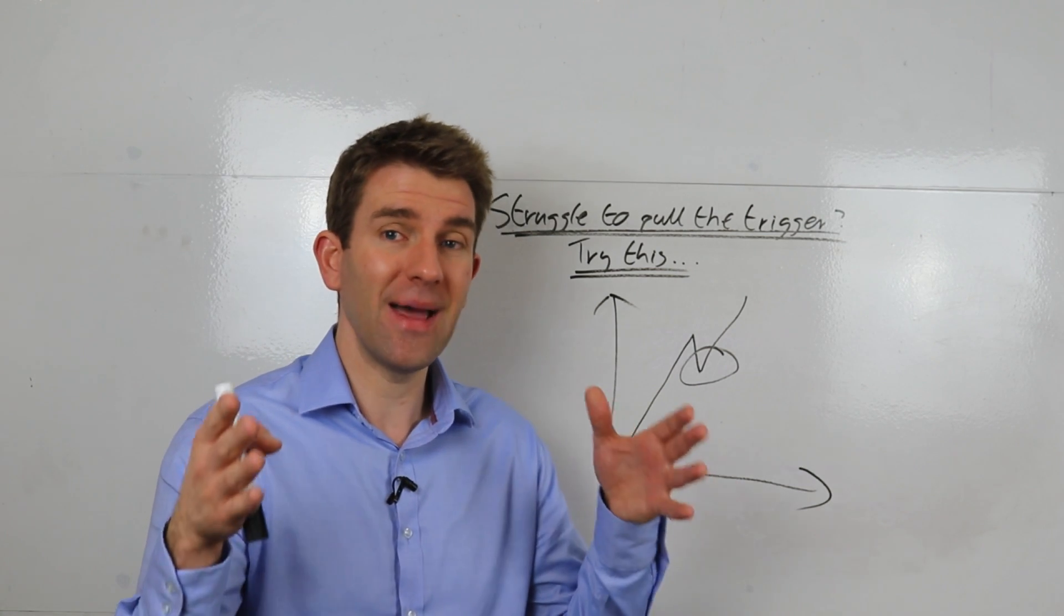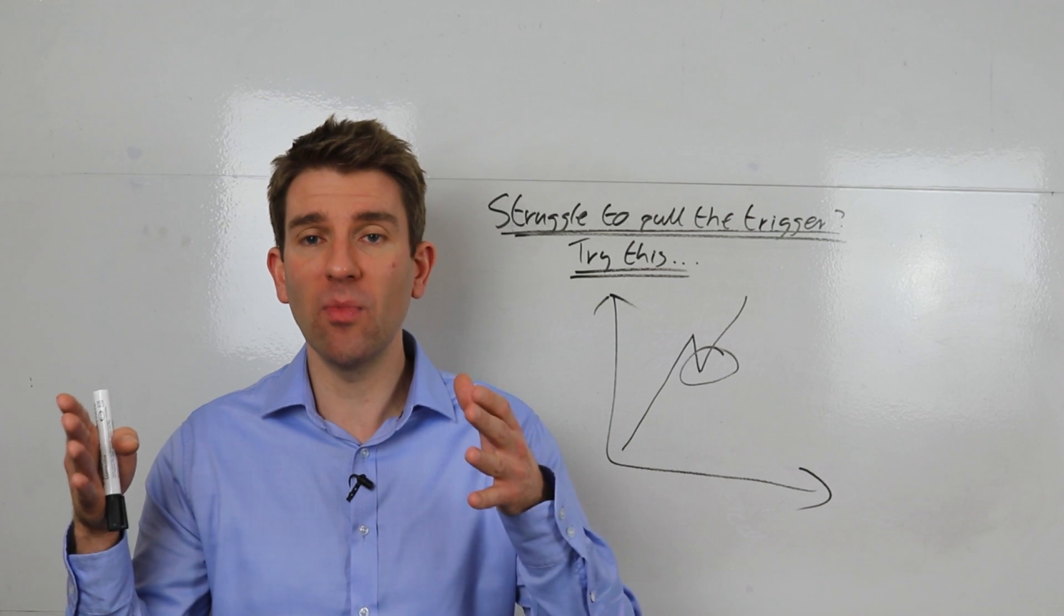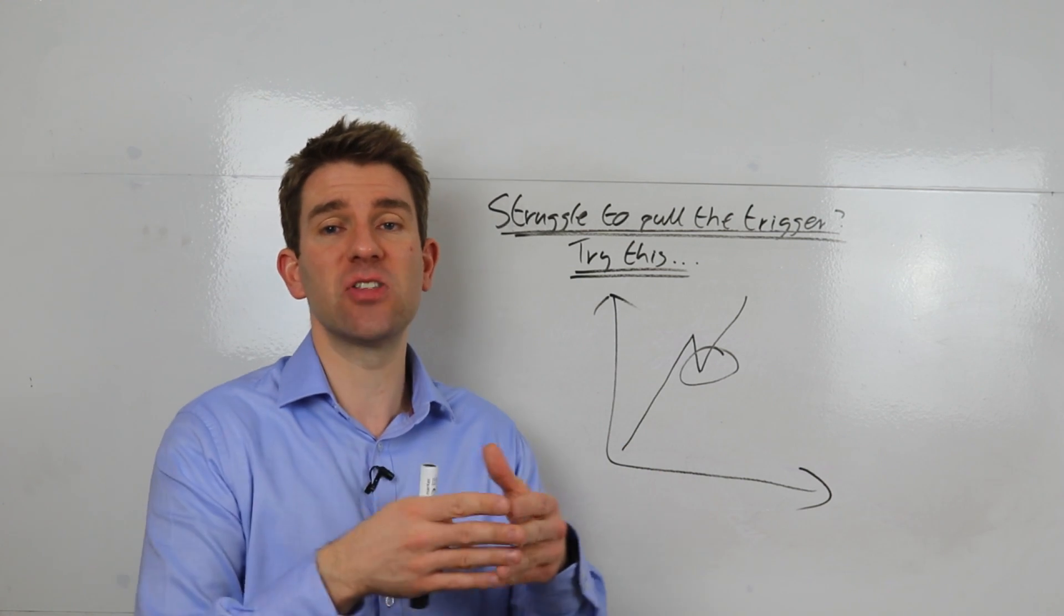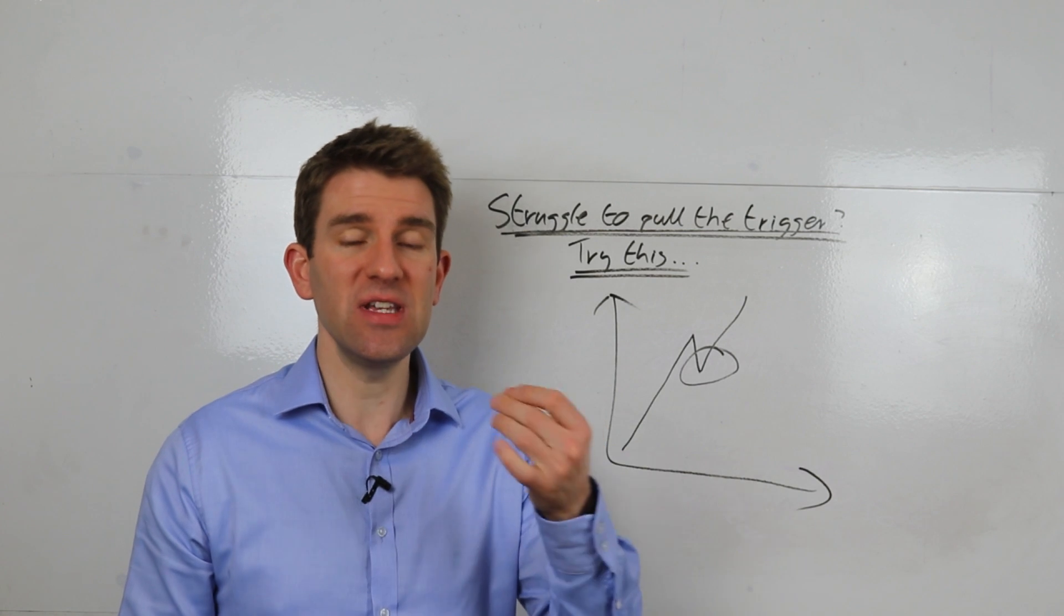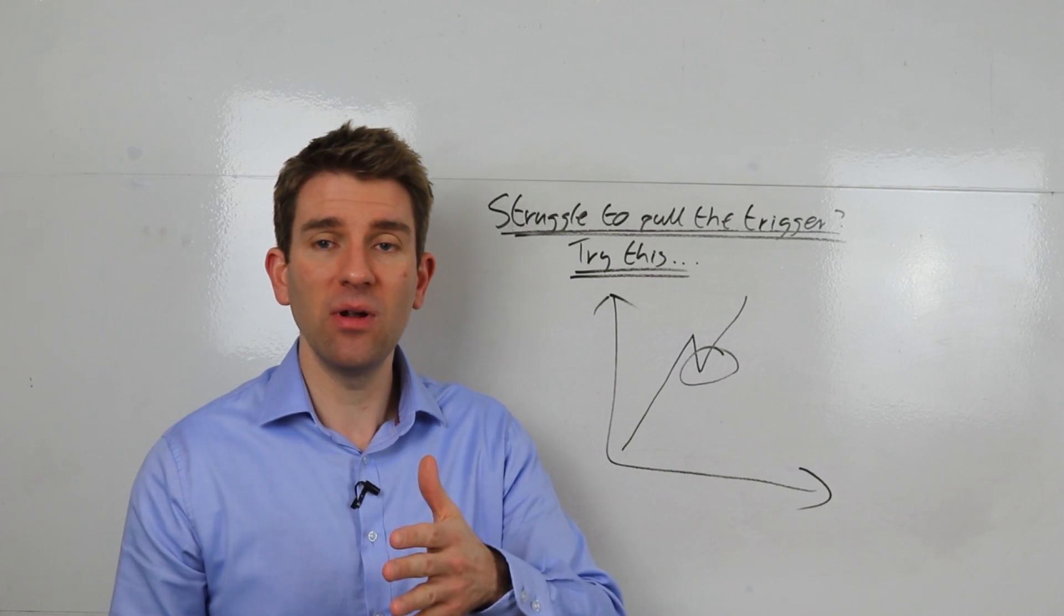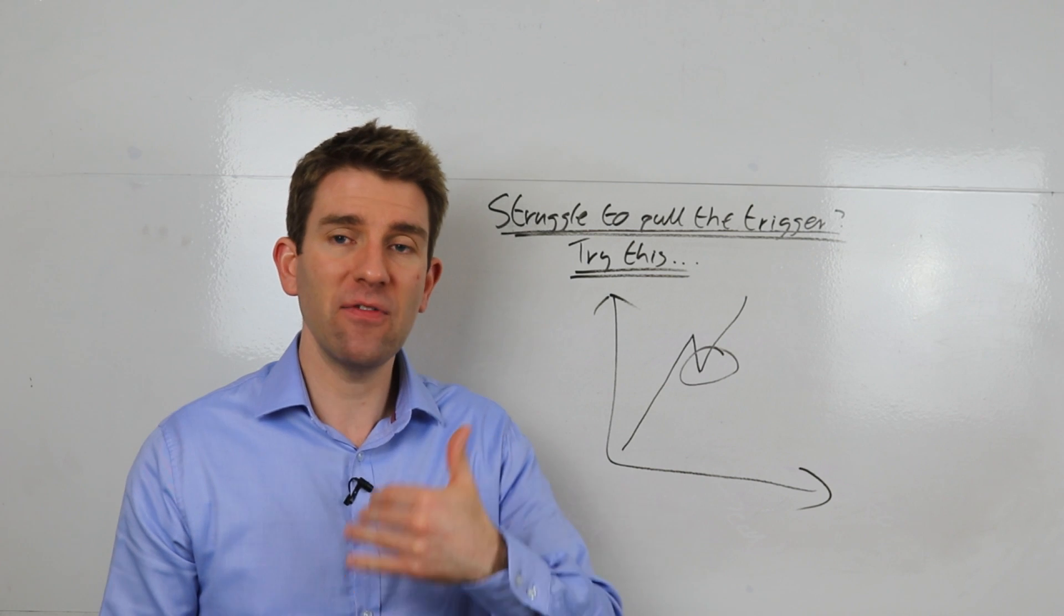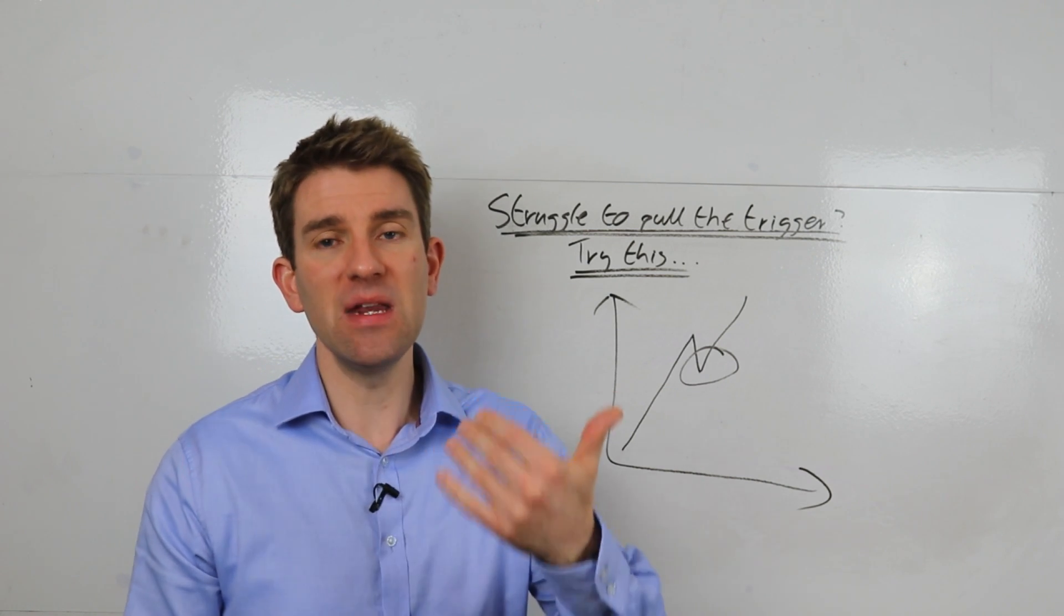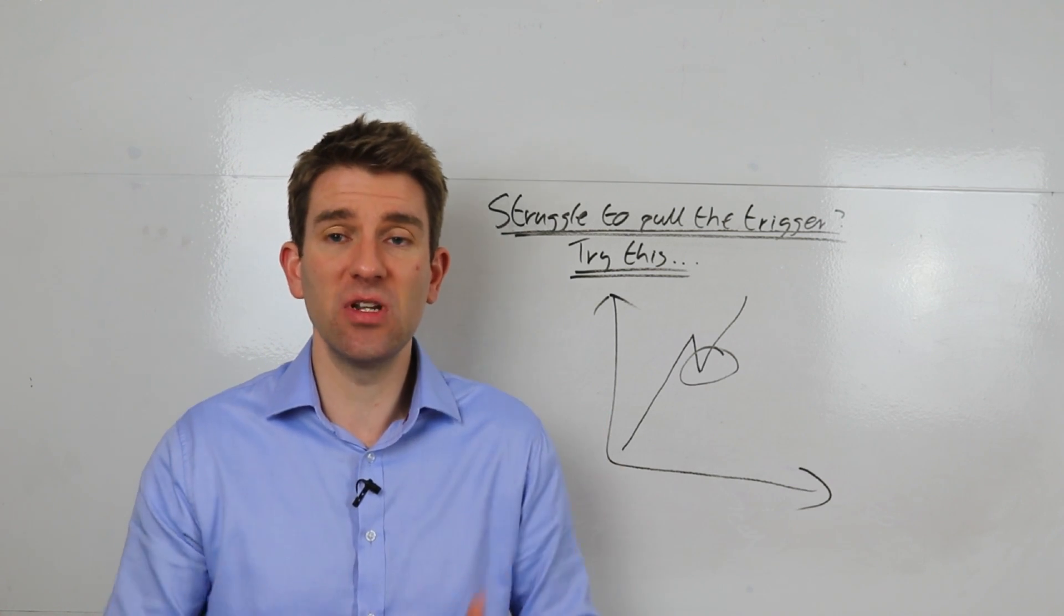So when you trade it, and hopefully if it's a sound strategy, you look at it and go, okay, well I would have been up X, you will go, right, well I need to now pull the trigger with my normal risk amount because it's in my best interests. If you don't see those results, you see that you were down, then you need to address the strategy and the system. And you never will be able to pull the trigger at any meaningful size consistently if you don't truly believe the system or strategy.